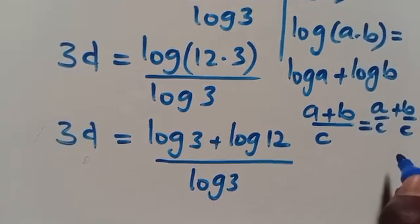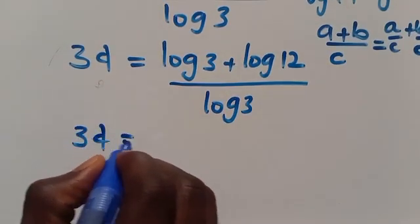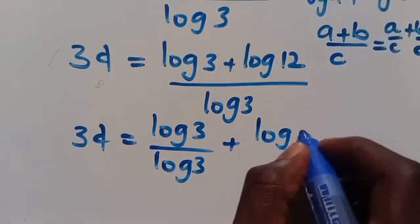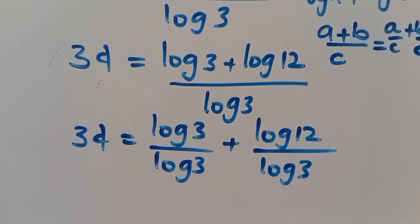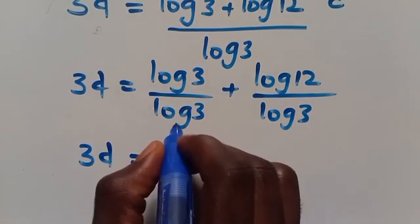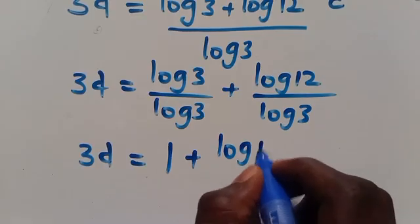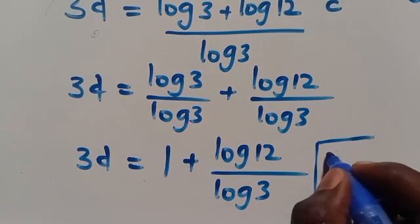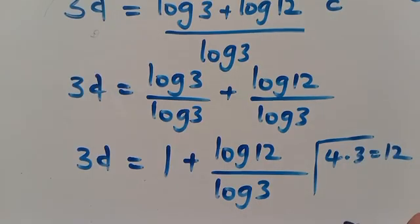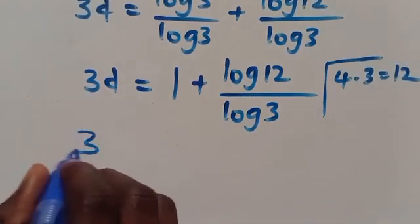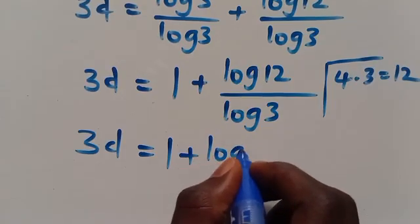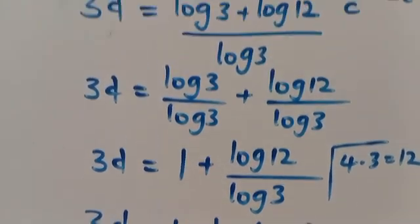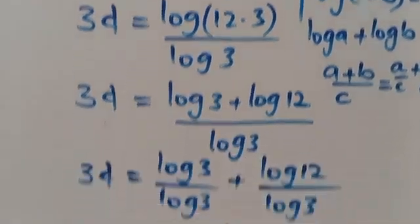We can simplify this: 3D equals log 3 divided by log 3 plus log 12 divided by log 3. Since log 3 divided by log 3 equals 1, we have 3D equals 1 plus log 12 divided by log 3. We can also write 12 as the product of 4 times 3. Substituting, we have 3D equals 1 plus log(3 times 4) divided by log 3, and applying the product law gives us the next step.